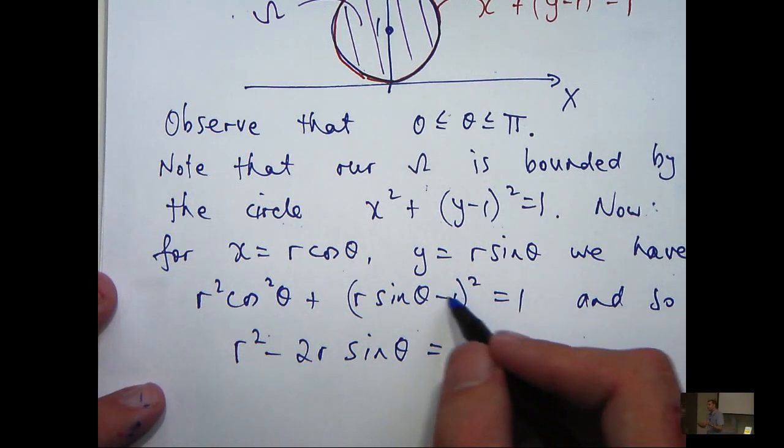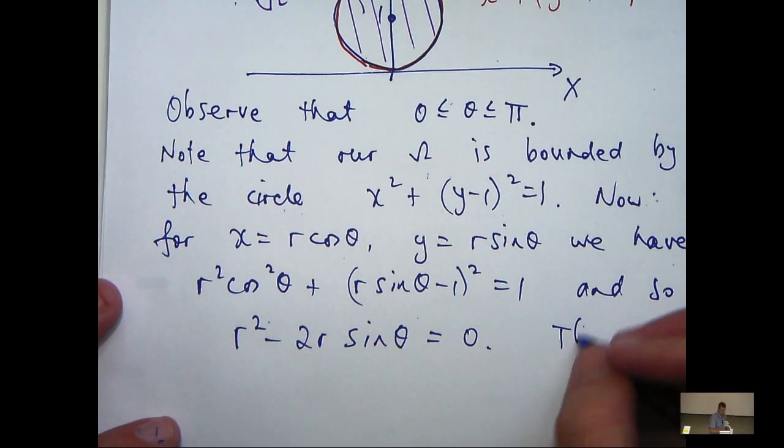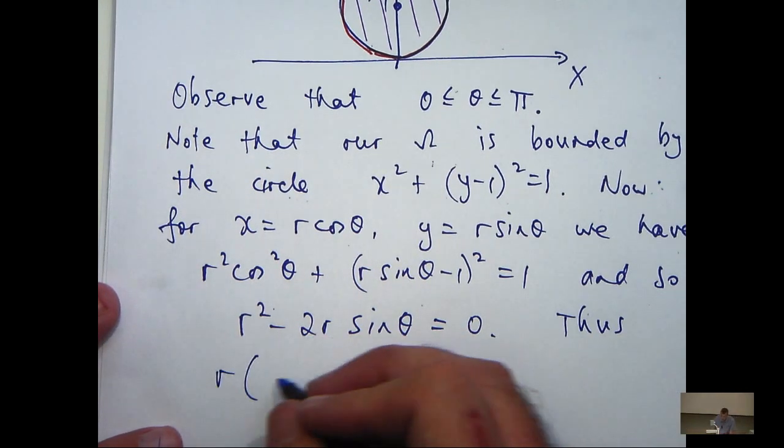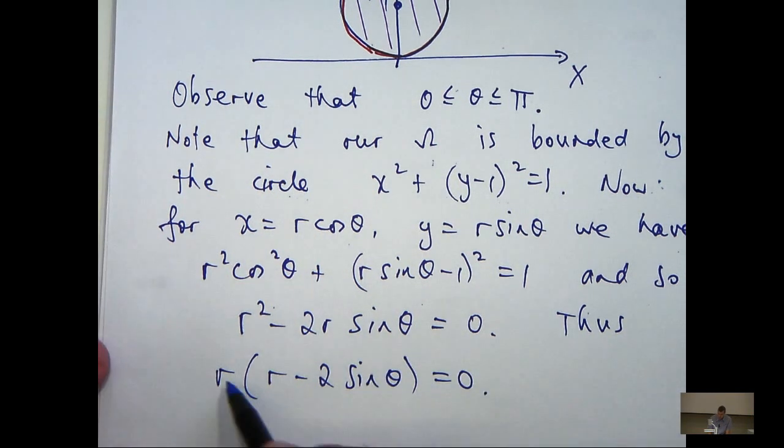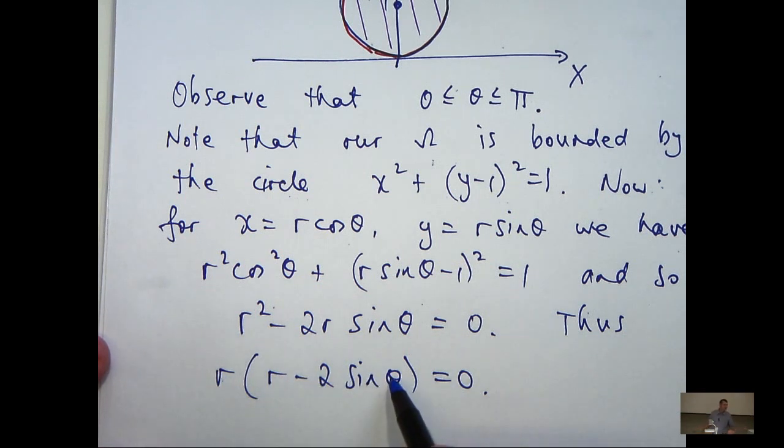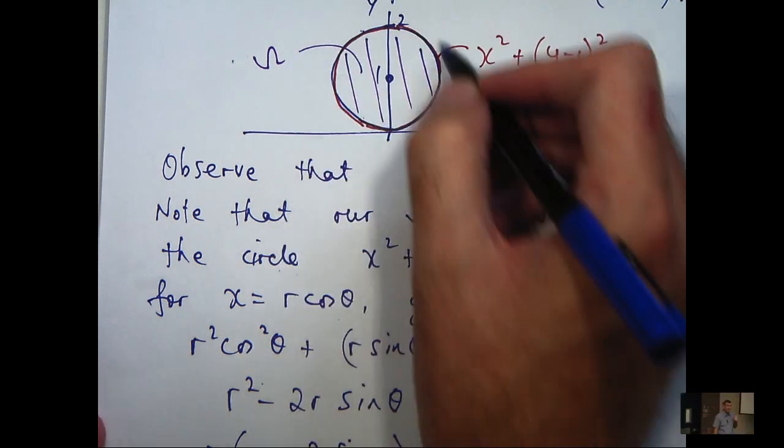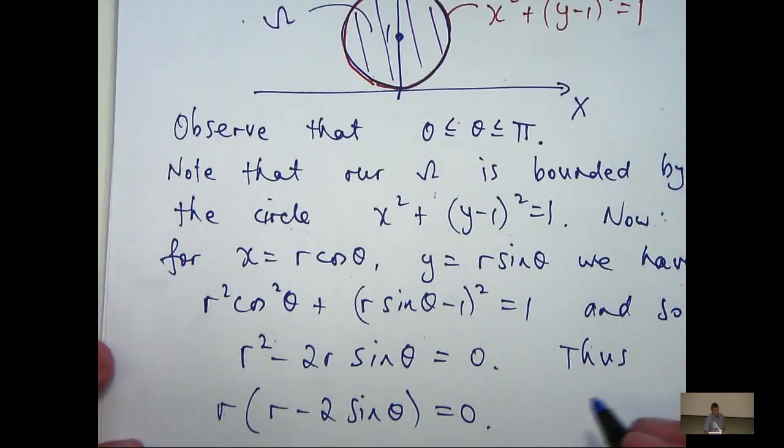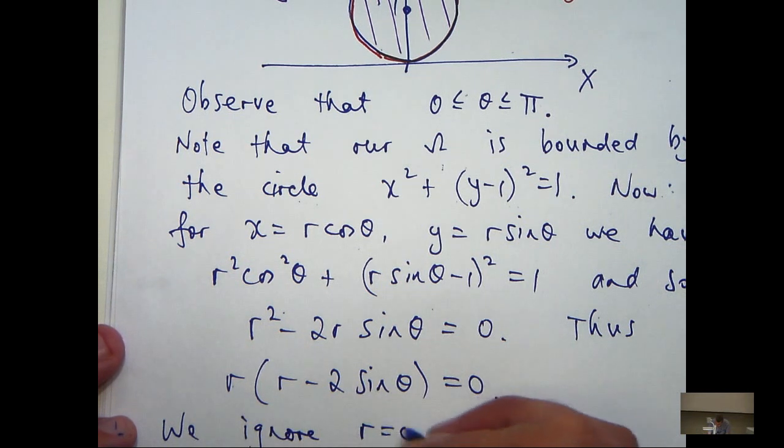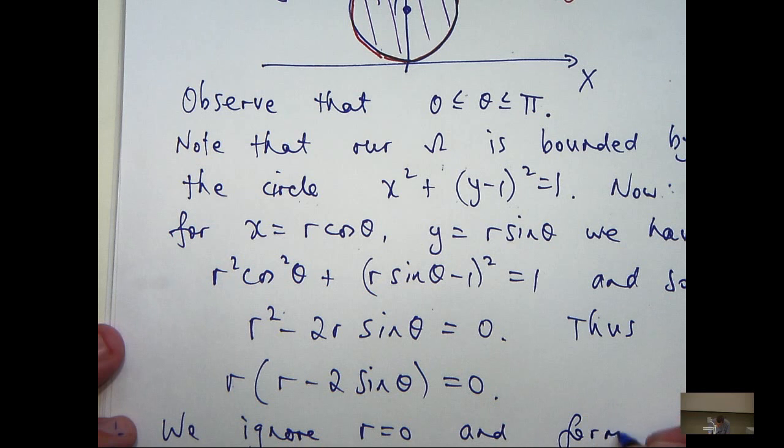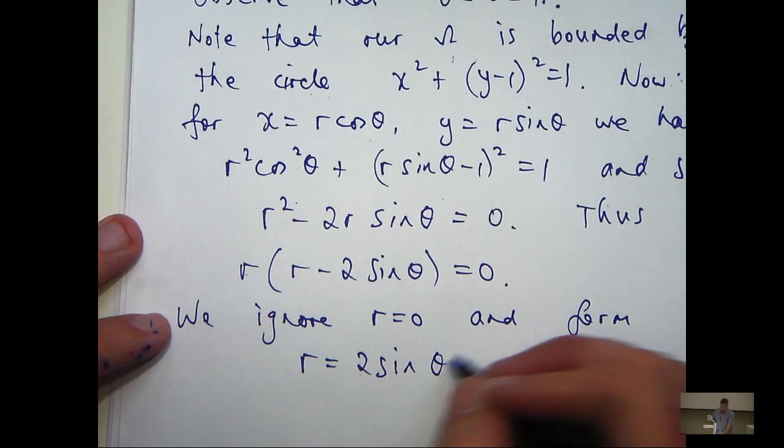Now, when I expand the 1 out here, I can cancel those off. So I'll get a 0 on the right-hand side. So factorizing, I'll get the following. Now, either r equals 0 or r minus 2 sin theta equals 0. But if r equals 0, this is just the origin. So that certainly doesn't describe the circle up here. So let's ignore r equals 0 and form r equals 2 sin theta.